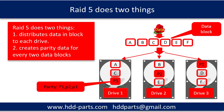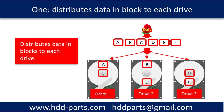RAID 5 does two things. First, it distributes data in blocks to each drive. Second, it creates parity data for every two data blocks. This picture shows the first thing RAID 5 does: distribute data in blocks to each drive. The data blocks are A, B, C, D, E, and F, being distributed to each drive.